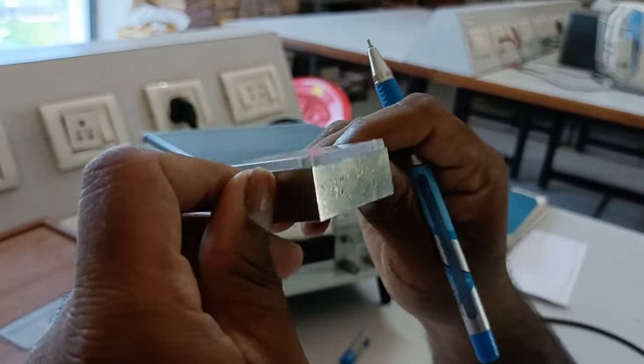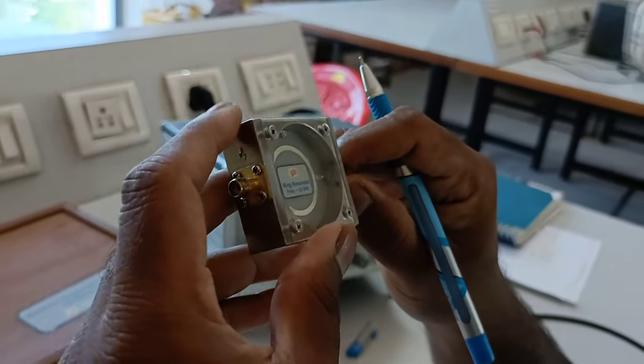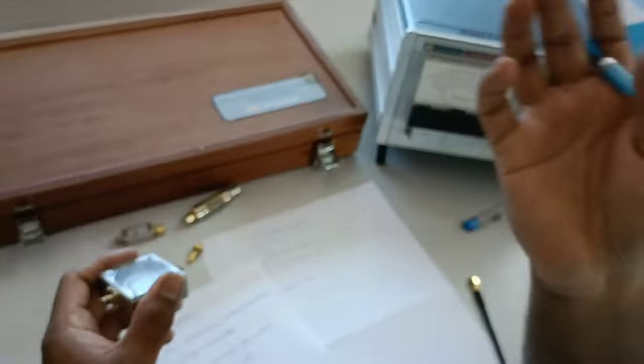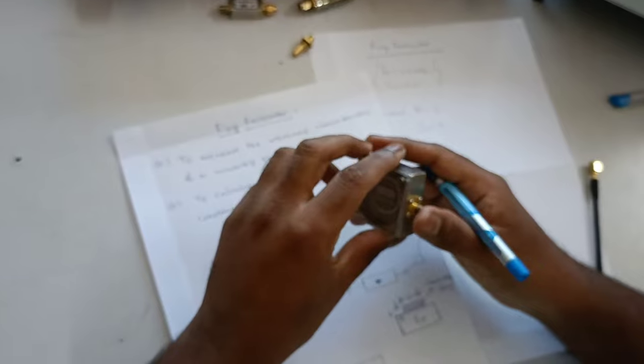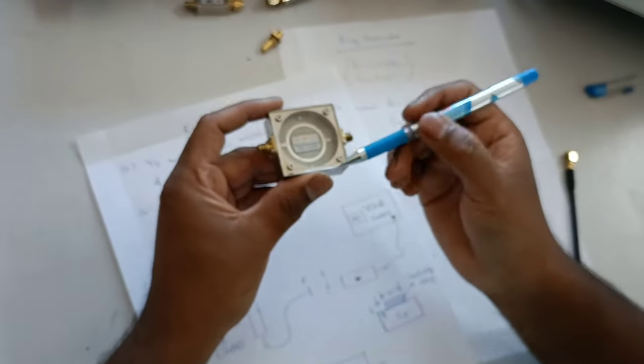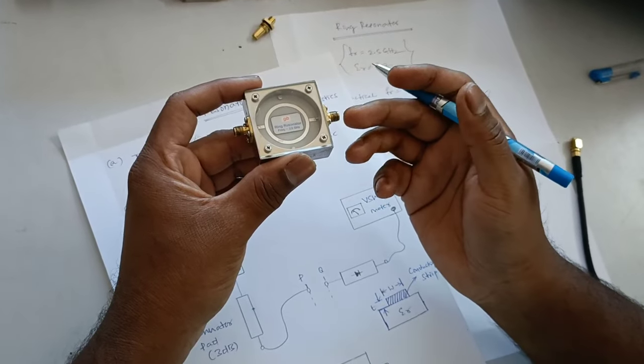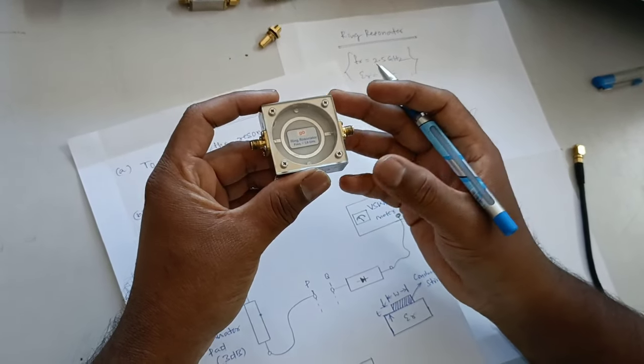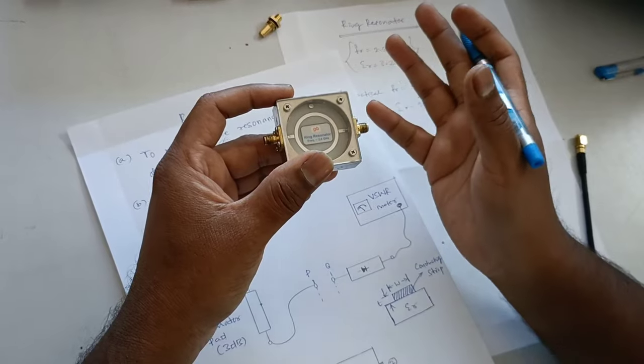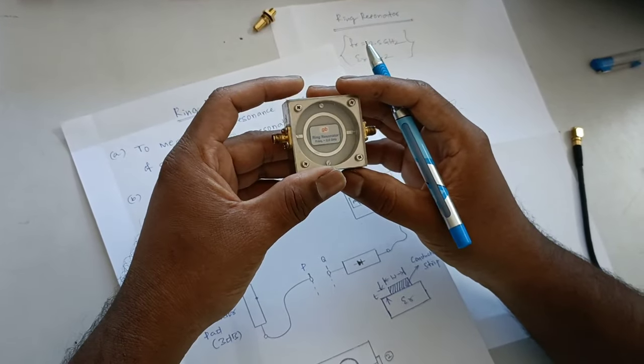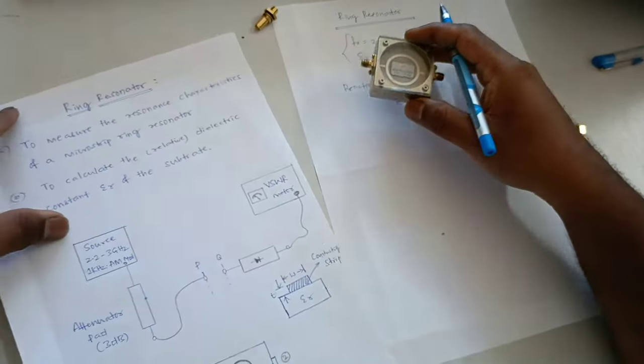Resonance graph, you know generally that at resonance point, you will get the maximum output, whether it may be voltage, current or power. Since we are dealing with microwave power, you will get maximum power at this 2.5 GHz. It should come, otherwise it will come around 2.47, 48, 49. Practically, it will come around from 2.47 to 2.50. That is what we have to do, the experiment.